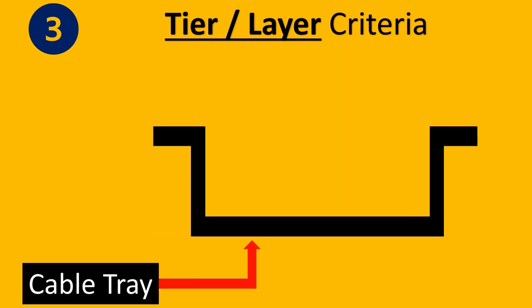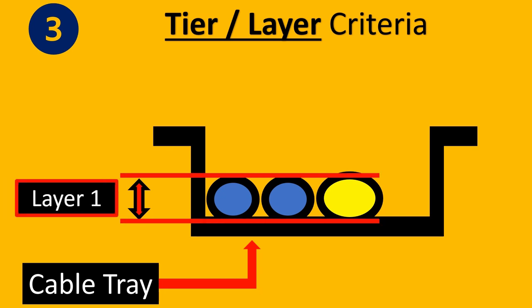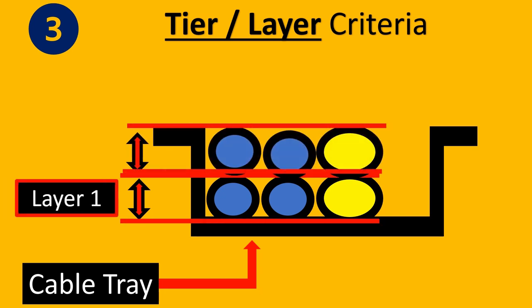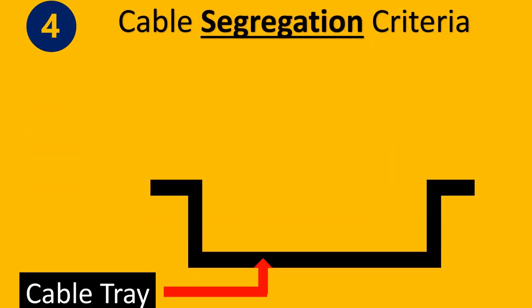Step three is finalizing the tier and layer criteria. This means, for example, you have a cable tray and cables placed in layer one. There could be another layer on top, also called tier or layer stacking — this would be layer two. We need to know how many layers the client wants, and also whether the cable tray width is sufficient enough to accommodate this.